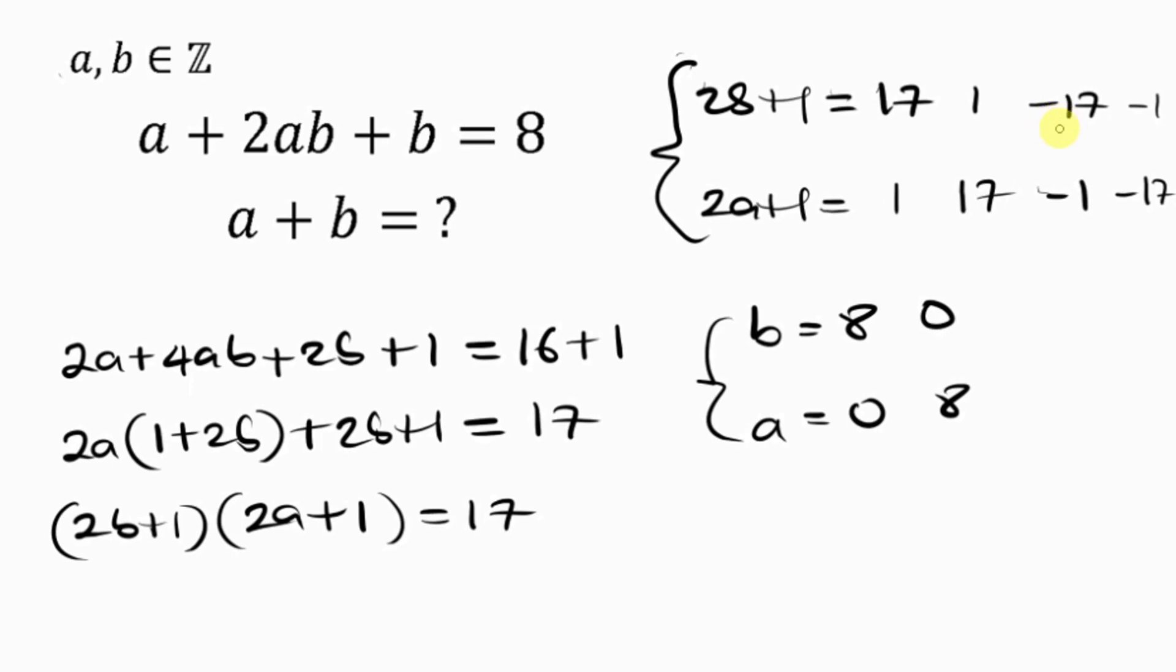So, negative 17 minus 1, that's negative 18, divide by 2, I get negative 9. Negative 1 minus 1, I get negative 2, divide by 2, that's negative 1. So, negative 1 minus 1, that's negative 2, divide by 2, that's negative 1. Negative 17 minus 1, that's negative 18, divide by 2, I get negative 9.